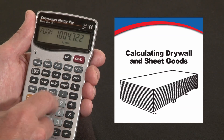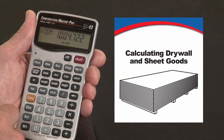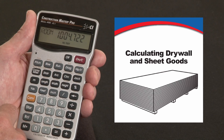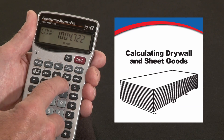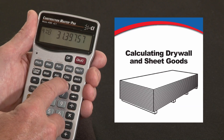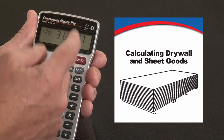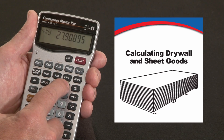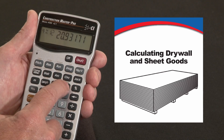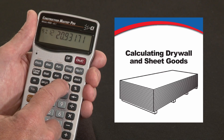Pressing it one more time gives me the room area — that includes the four walls plus the ceiling area. So now I can take that number, hit Convert, Drywall, and for 4x8 sheets I'm going to need 31.3, so call that 32. That's 28 sheets of 4x9 and about 21 sheets of 4x12.